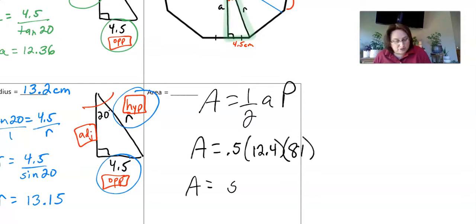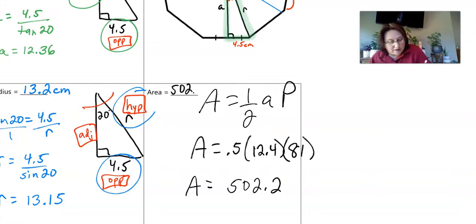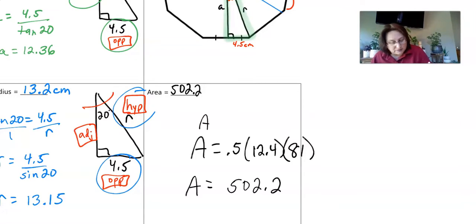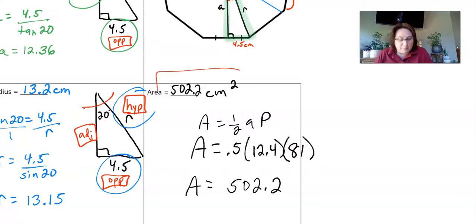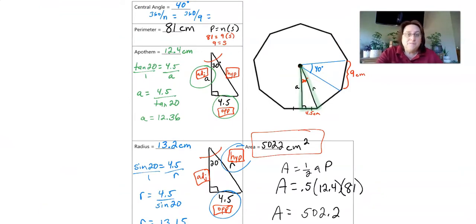Putting that into the calculator gives 502.2. Remember, area units are always squared, so the final answer is 502.2 centimeters squared. That is the area of this nonagon.